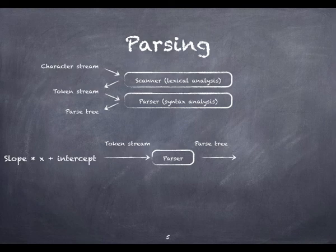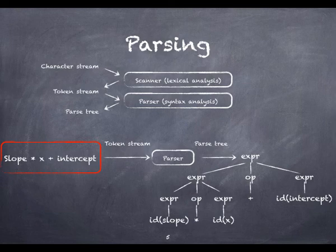The token stream generated by the scanner is used as input for the parser. Parsing organizes tokens generated by the scanner into a parse tree that represents higher-level constructs: statements, expressions, subroutines, and so on in terms of their parts.